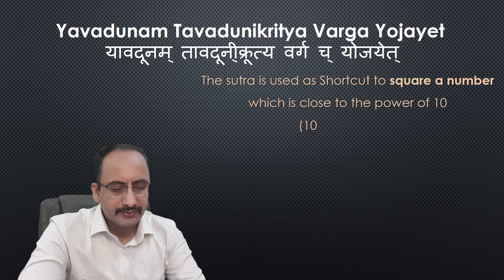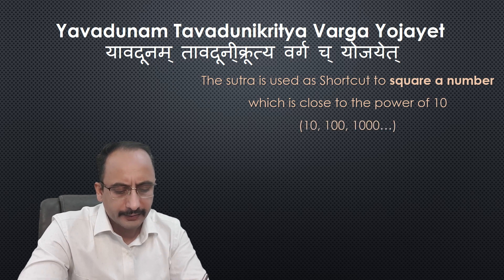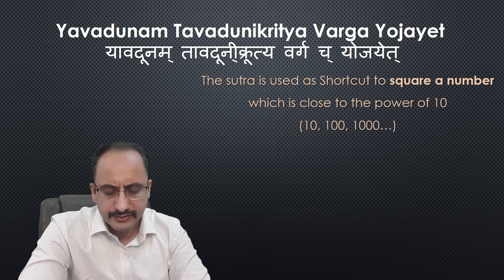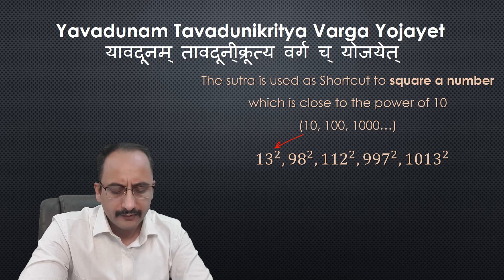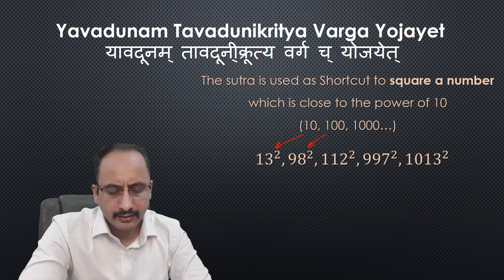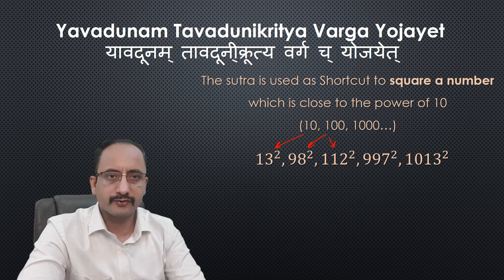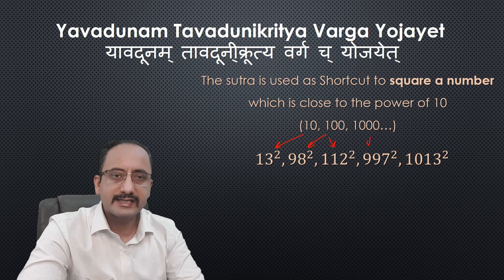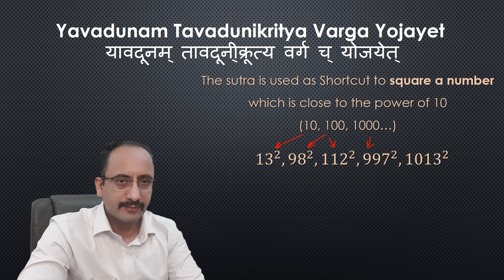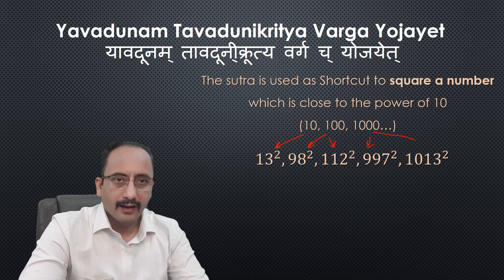For example, 13² — here 13 is very close to 10. 98² and 112² — both 98 and 112 are close to 100. 997² and 1013² — both are close to 1000. So these numbers which are close to the powers of 10, their squares can be calculated using this sub-sutra of Vedic mathematics.